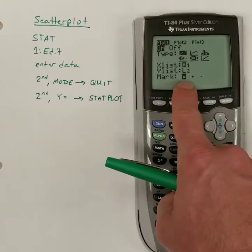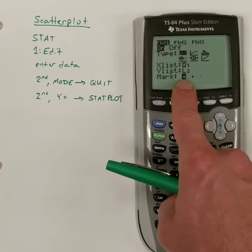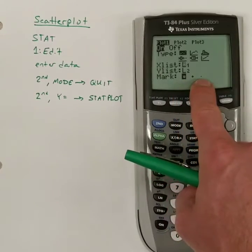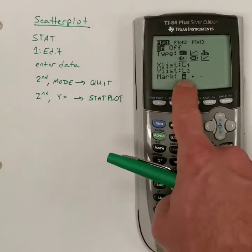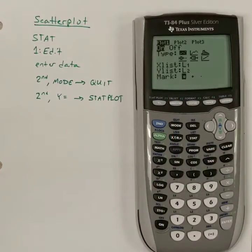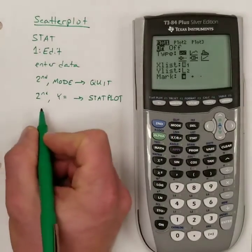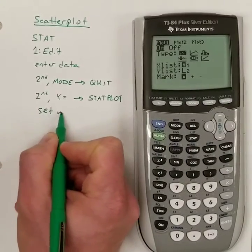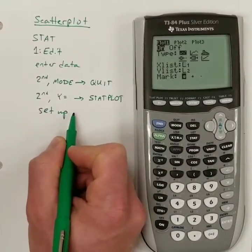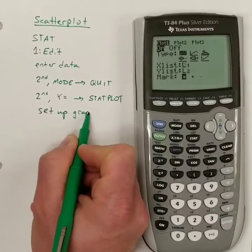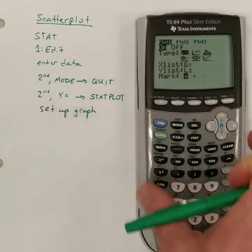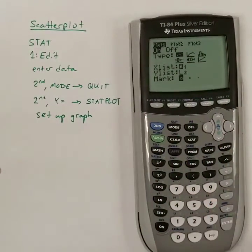And then the mark. This is what your points on the graph will look like. I like the little boxes. They're easier to see. You could also use a plus or a tiny dot. Either way, I'm just going to use these little boxes. So, I'll just say you set up the graph. So, that's just sort of general for all these little features.